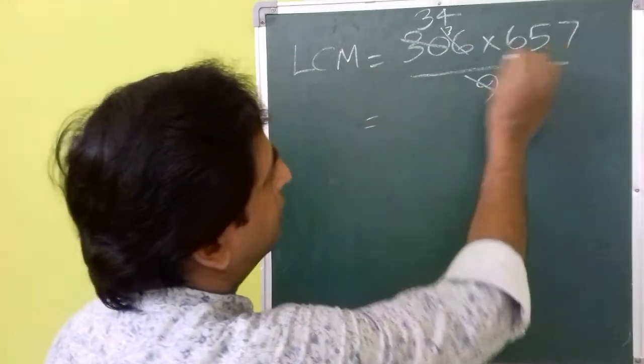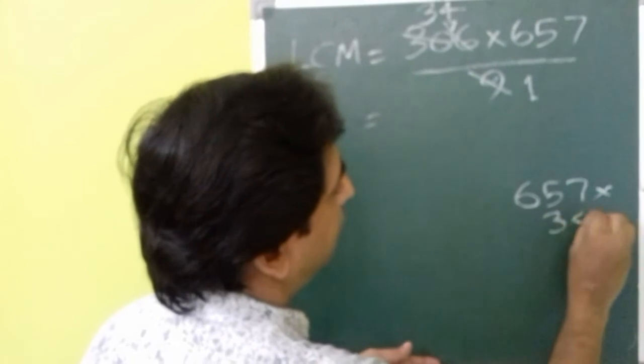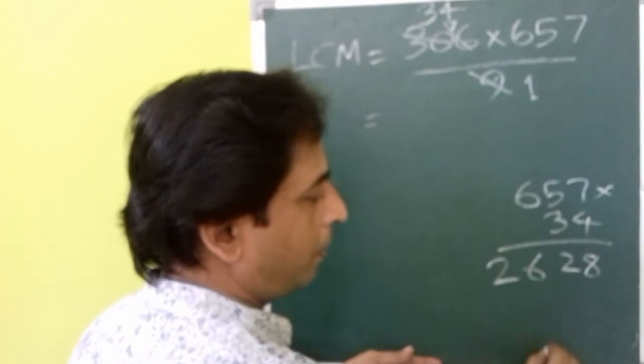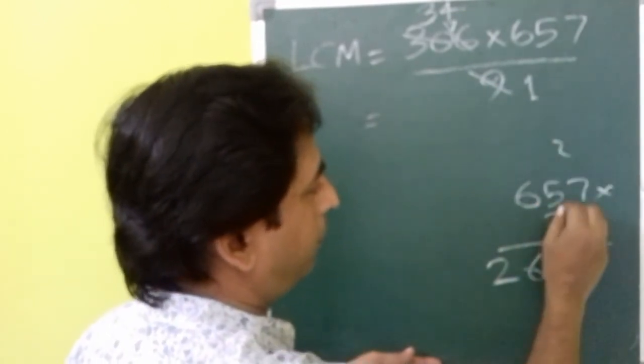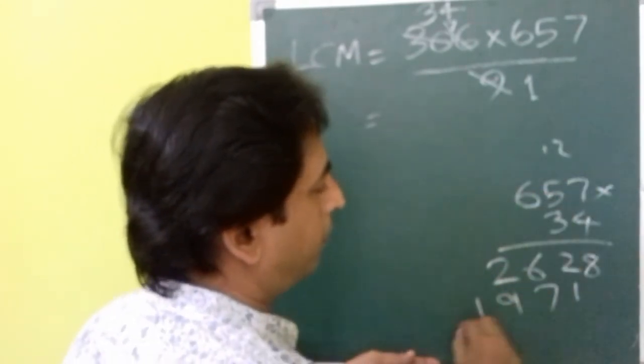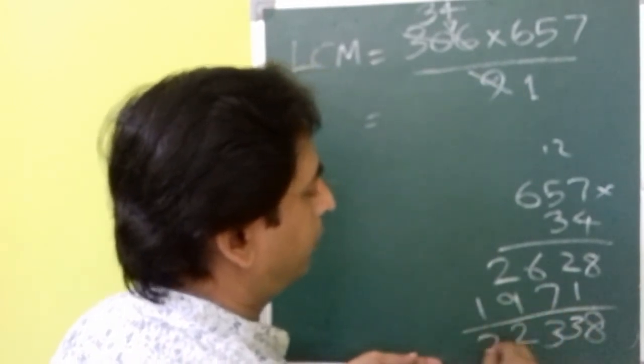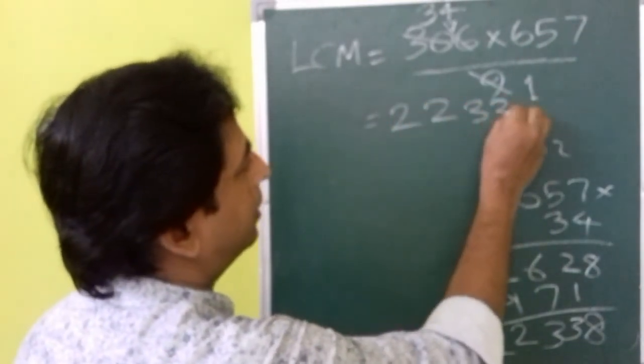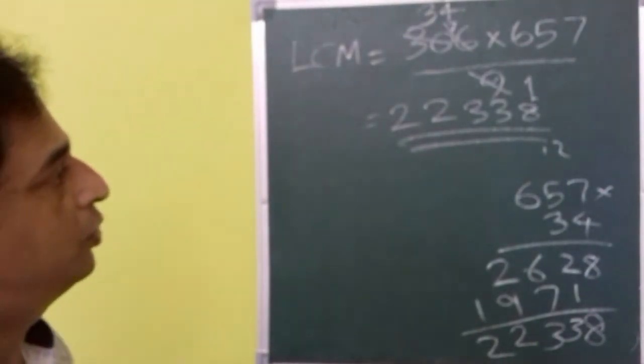657 multiplied by 34 is... That will give you 22338. That will be the LCM of these two numbers.